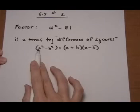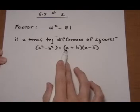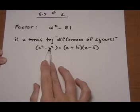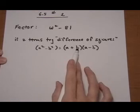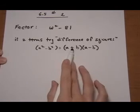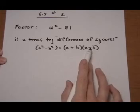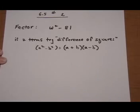Basically, you take the square root of A squared, which is A, and the square root of B squared, which is B, and then you add first, then subtract in the binomials.